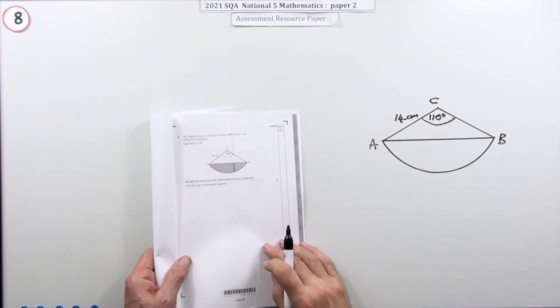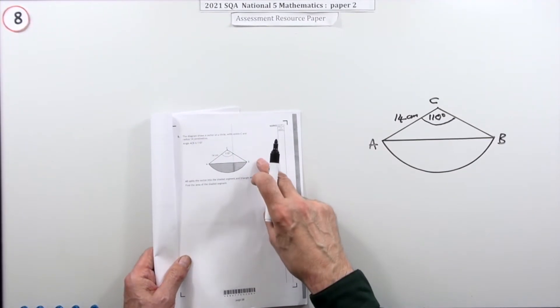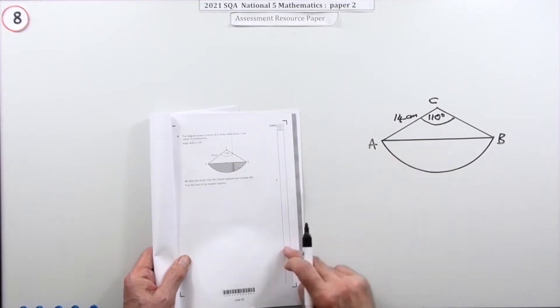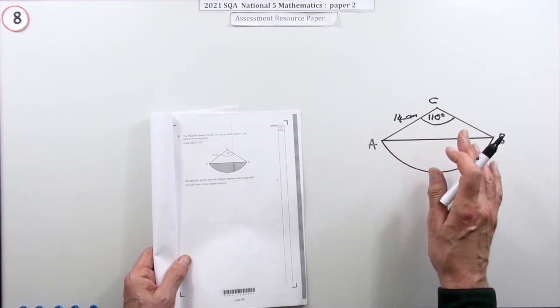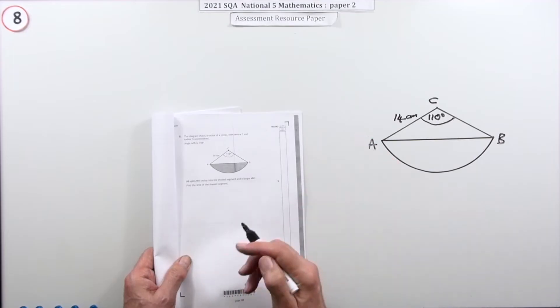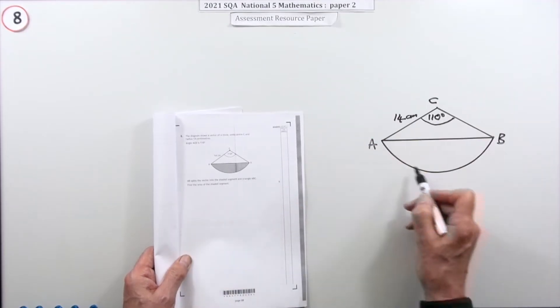Number eight from paper two of the 2021 National Five resource paper. Five mark question for calculating the area of a part of a circle. It should have just said calculate the shaded area and you'd have to figure out the bits and pieces.